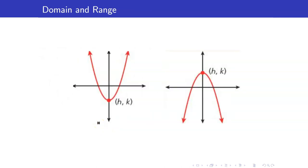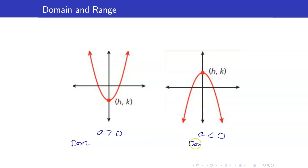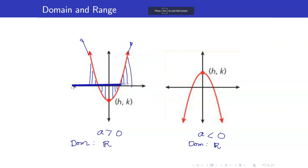Now let us talk about the domain and range of quadratic functions. Recall that we have two cases: when a is positive and when a is negative. Let us assume that (h, k) is our vertex. In both cases, the domain of a quadratic function is the set of all real numbers, because when you project this, it will extend indefinitely, so you will get the entire x-axis.